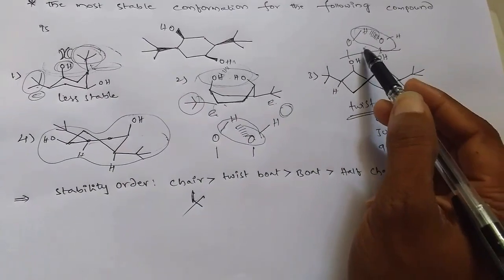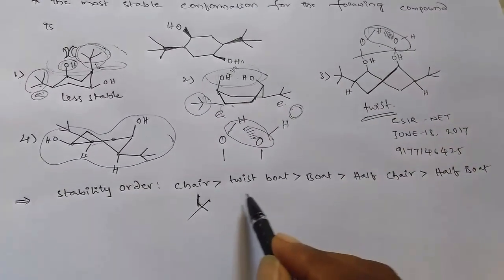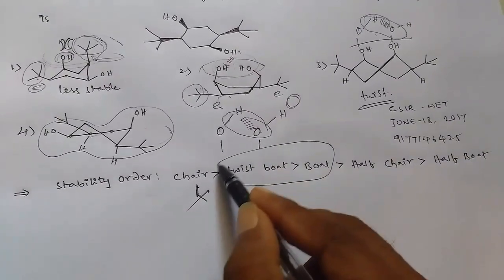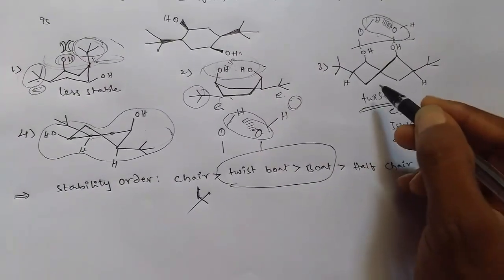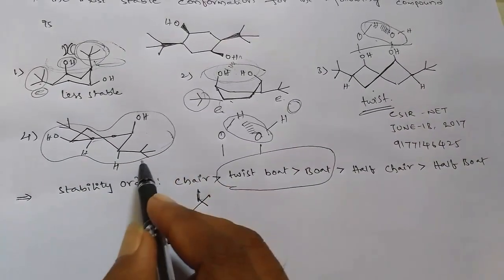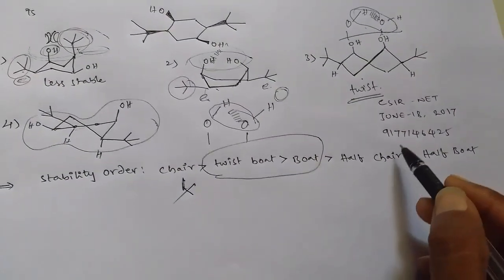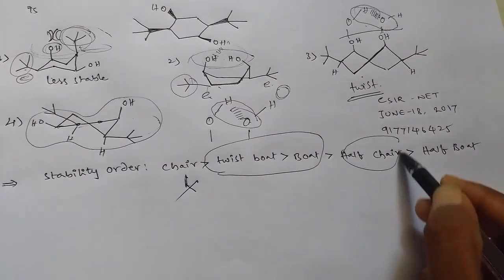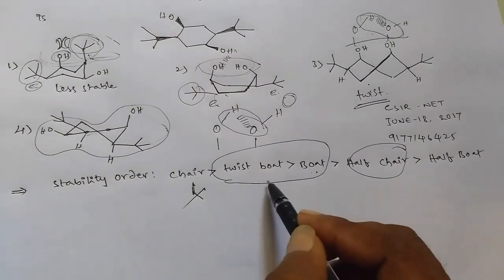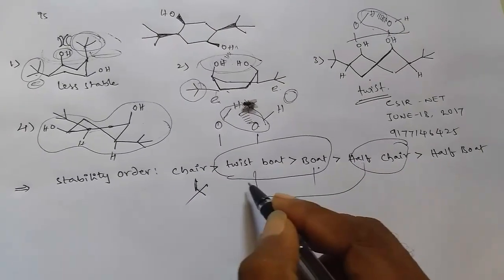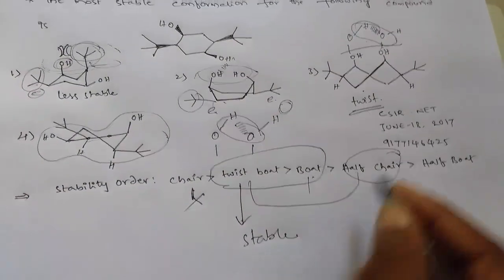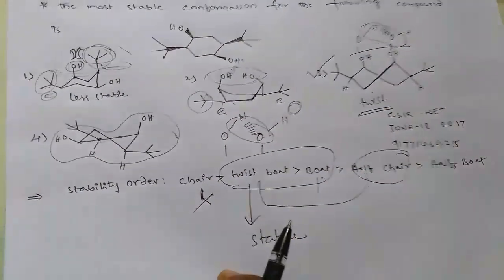According to our stability order, twisted boat is more stable than boat form. The half chair is the least stable when compared to twisted boat and boat. Therefore, among these options, the twisted boat is the most stable conformation, making option three the correct answer for this problem.